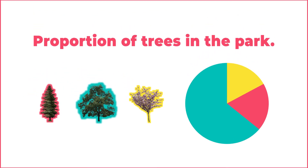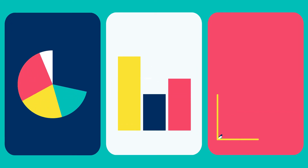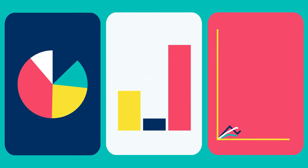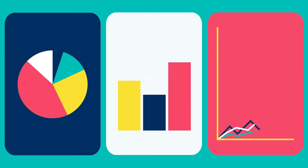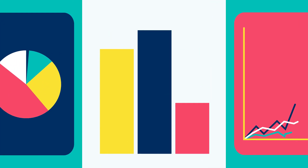So when you encounter a chart or graph, just by recognizing the type of chart or graph, you can better consider the objective of the scientist in sharing the information.